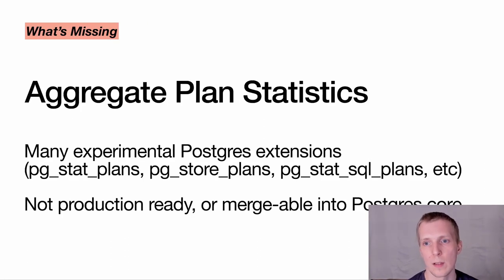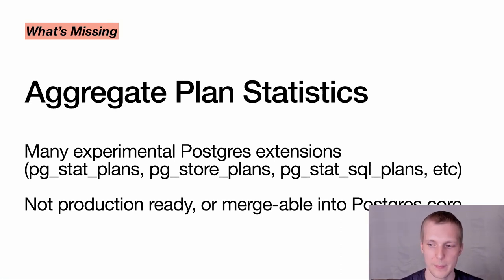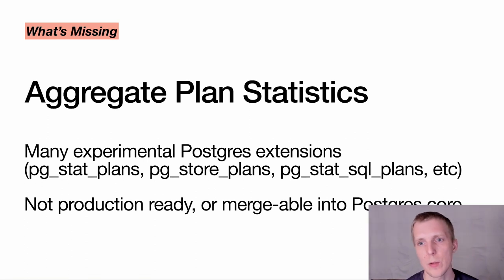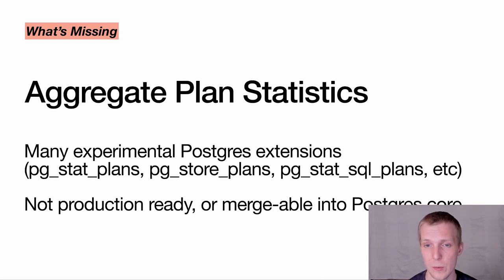One thing still missing: we now know how long planning takes, which is critical information. But we still don't know what kinds of plans get generated. Outside of auto_explain samples, it's really difficult to understand what query plans get created in your database on a summarized aggregate basis. There have been a couple of efforts in extensions — pgstat_plans was an effort many years ago, which eventually branched off into pg_stat_statements, but unfortunately is no longer maintained and not safe for production.